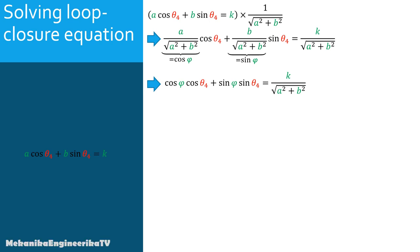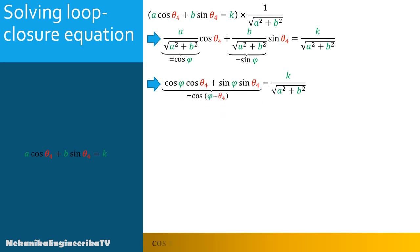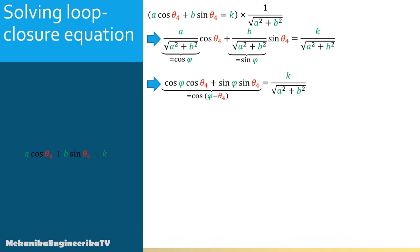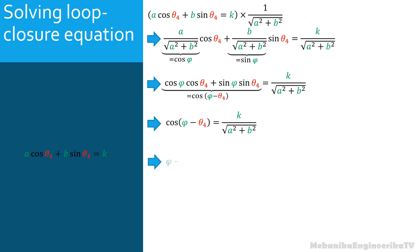The left-hand side of the equation can be simplified as cos(φ − θ4), because cos x·cos y + sin x·sin y = cos(x − y) for any angles x and y. Therefore, we have now: cos(φ − θ4) = K / √(A² + B²). Consequently, φ − θ4 = ± arccos(K / √(A² + B²)), or θ4 = φ ± arccos(K / √(A² + B²)).